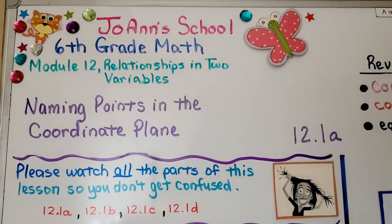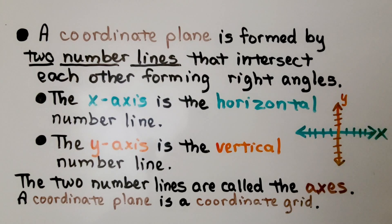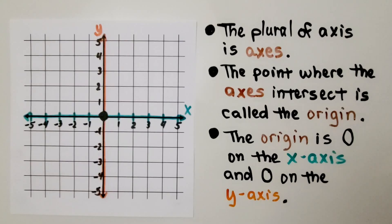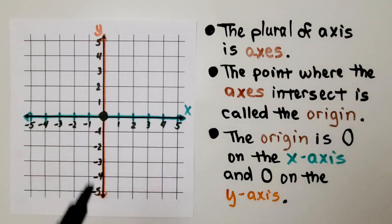Lesson 12.1a: Naming Points in the Coordinate Plane. A coordinate plane is formed by two number lines that intersect each other, forming right angles. The x-axis is the horizontal number line, and the y-axis is the vertical number line. The two number lines are called the axes, and a coordinate plane is also called a coordinate grid. Here we have the x-axis and here we have the y-axis. The plural of axis is axes.